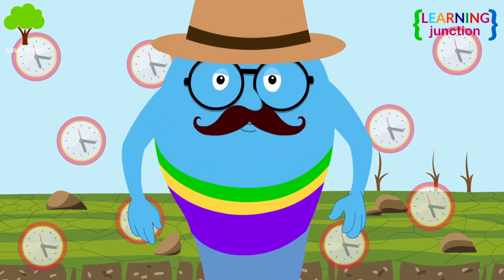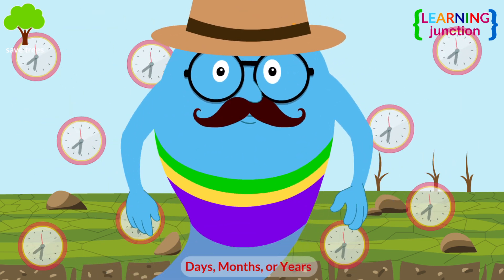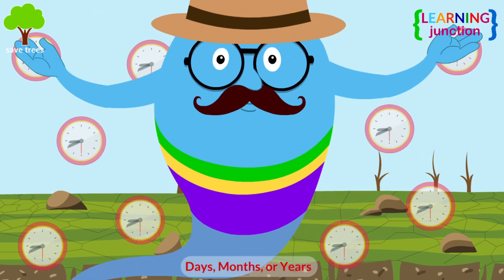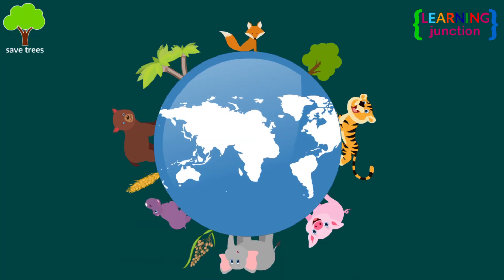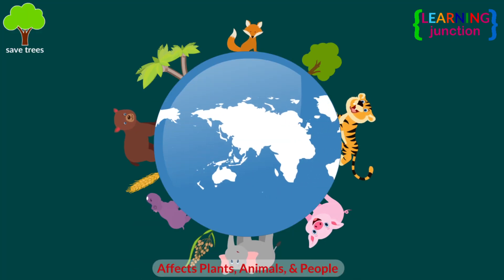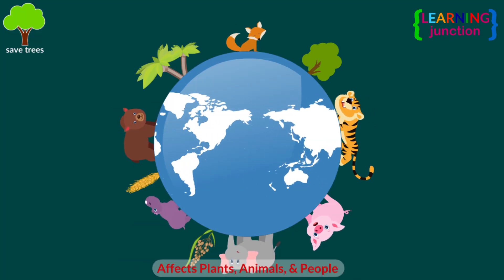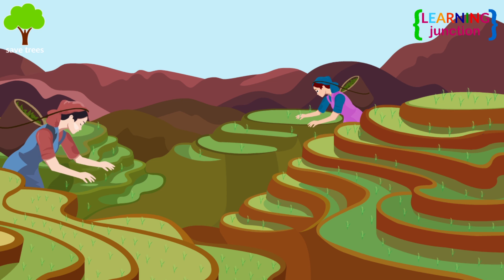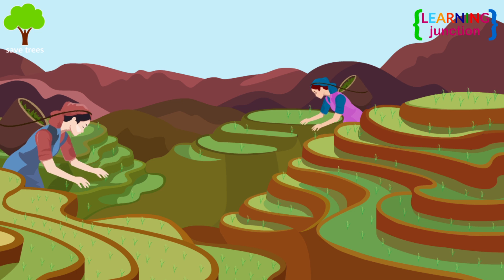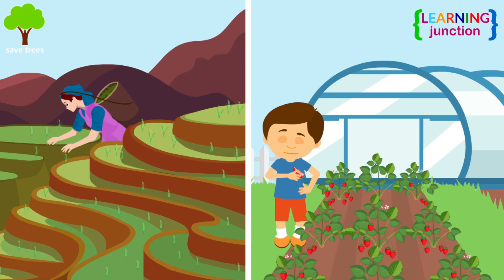A drought can last for days, months, or years. Drought affects plants, animals, and people. It is a serious problem for farmers and for the people who depend on the crops they produce.